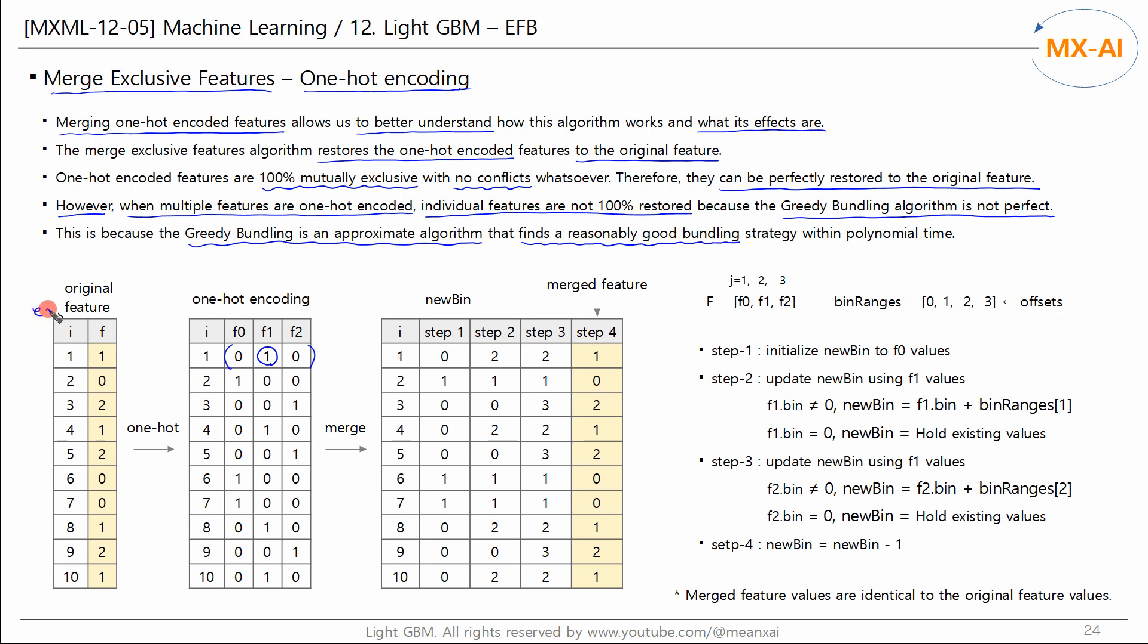Let me give you an example. There is one feature. We use the merge exclusive features algorithm to merge these features back into one feature. The merged feature will then be completely identical to the original feature.